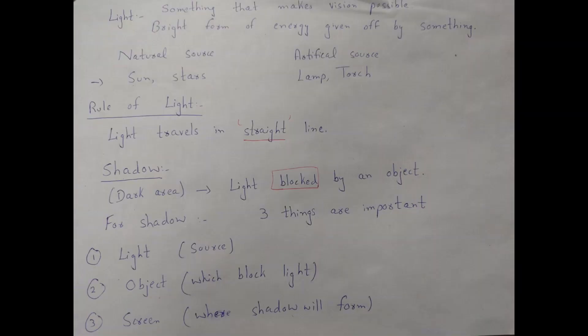We will discuss this. First of all, we will discuss about light — what is actually light. Light is something that makes vision possible. We can see anything around us because of light. Alhamdulillah, we have eyes, and due to our eyes we can see things, but with the help of light. If there is no light around us, we will be unable to see anything. Just imagine you are sitting in a dark room with a person or object in front of you — you are unable to see it because there is no light.